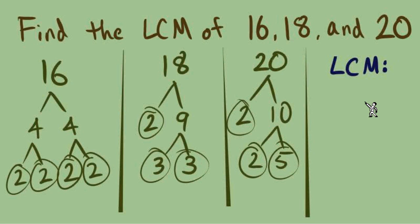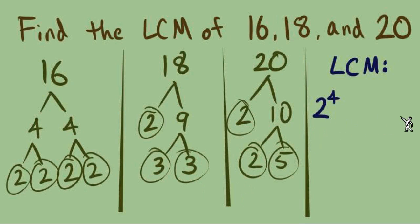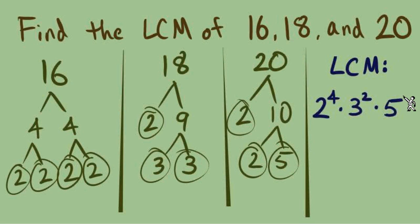Starting with 2s: the first tree for 16 has four 2s — definitely the most. Instead of writing 2 times 2 times 2 times 2, I'll use exponential notation: 2 to the power of 4. The exponent 4 tells us how many times we'd see 2 in the multiplication. For 3s: none in the tree for 16, two 3s in the tree for 18, and none in the tree for 20 — so we use two 3s, written as 3 to the second power. For 5s: none in the first two trees, one 5 in the tree for 20 — so we use one 5, with no exponent needed.